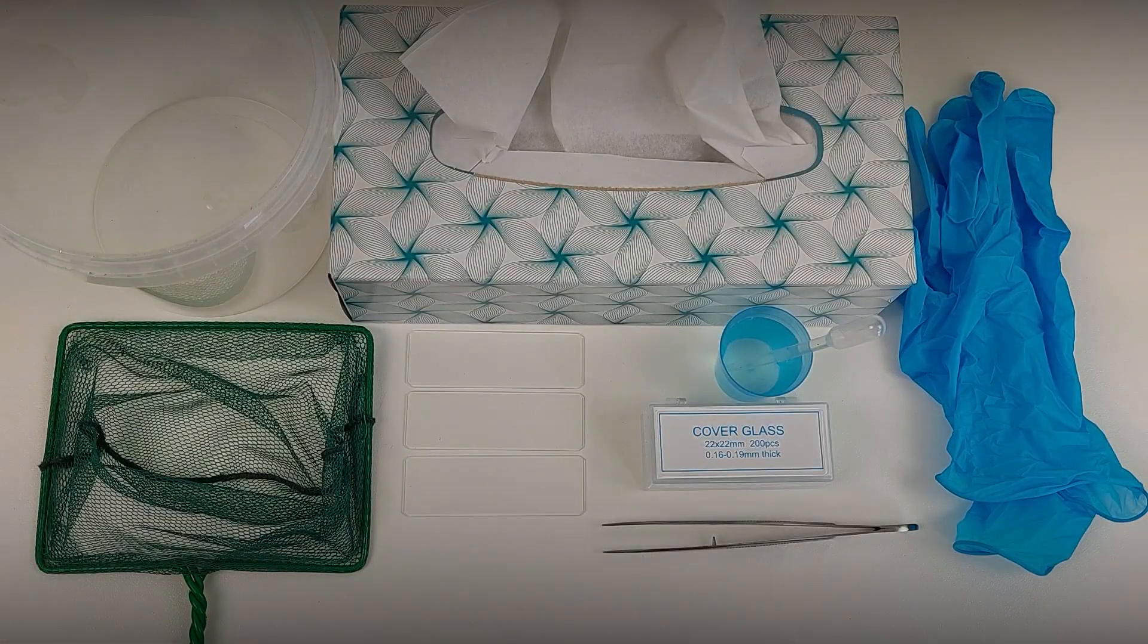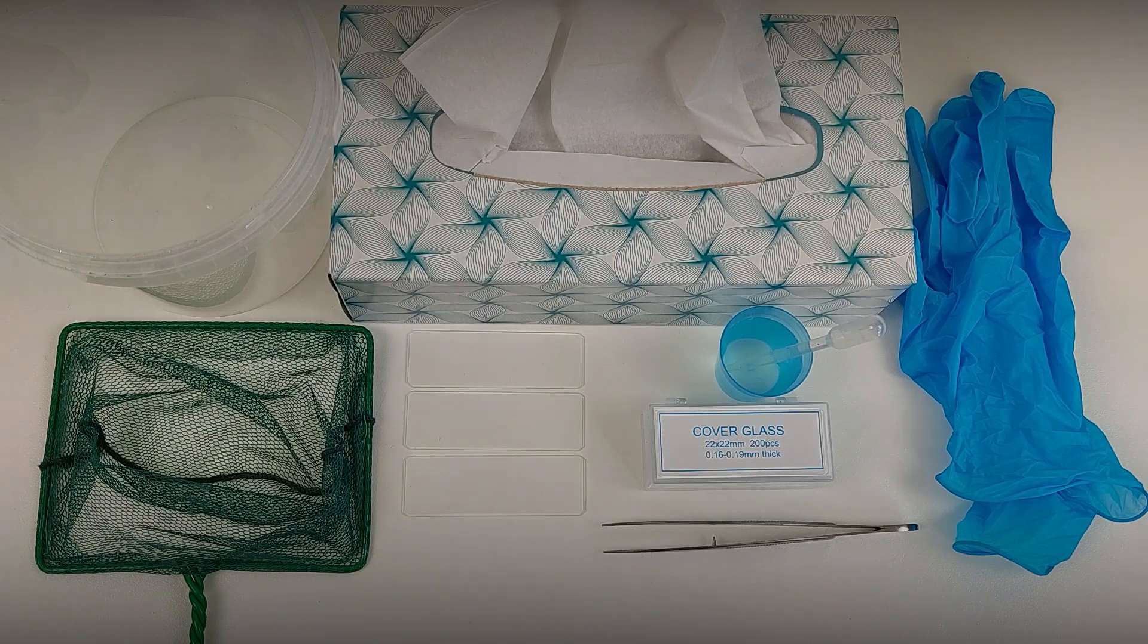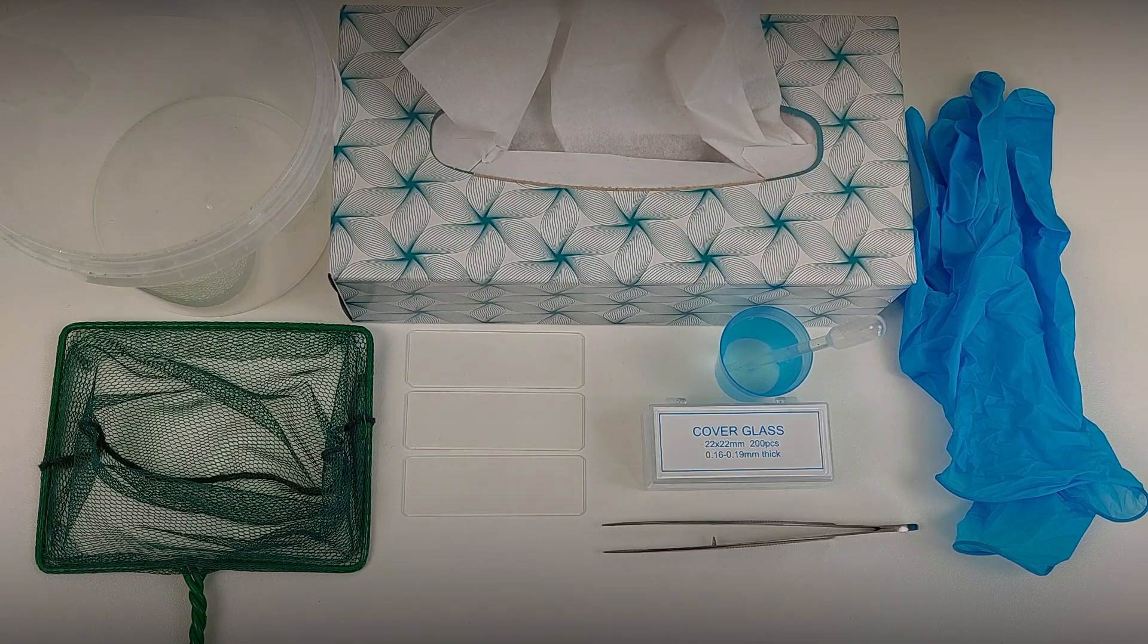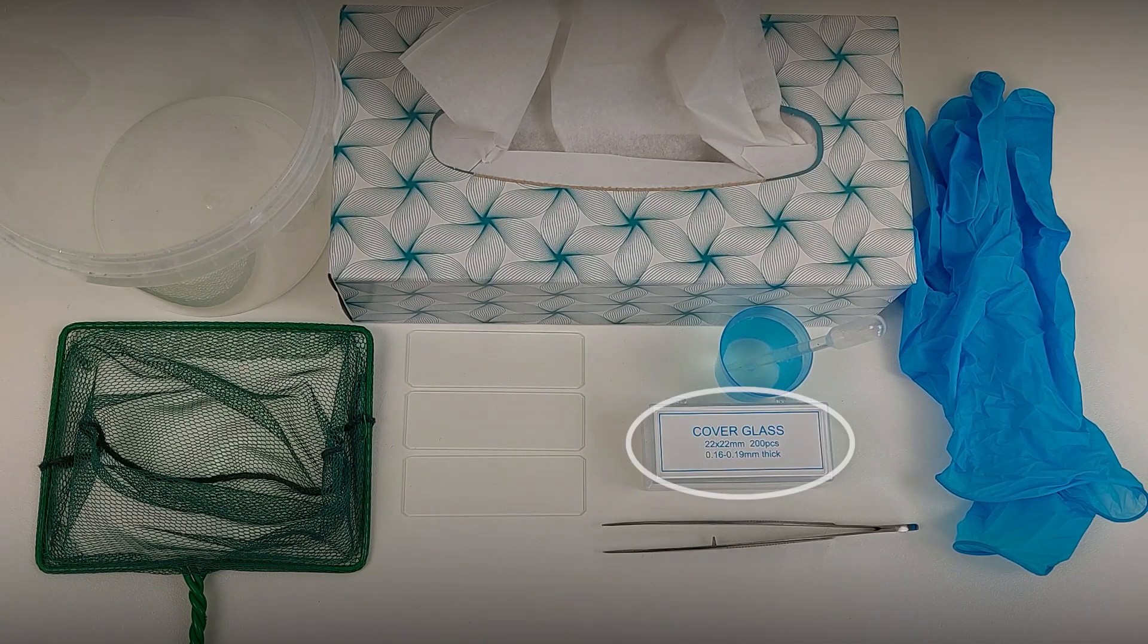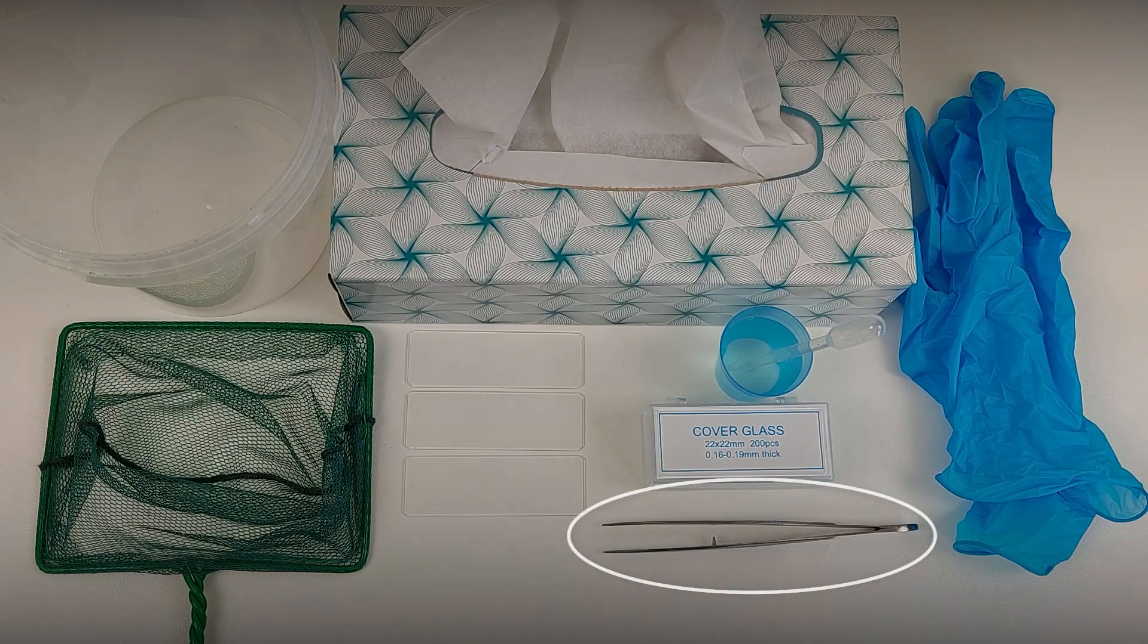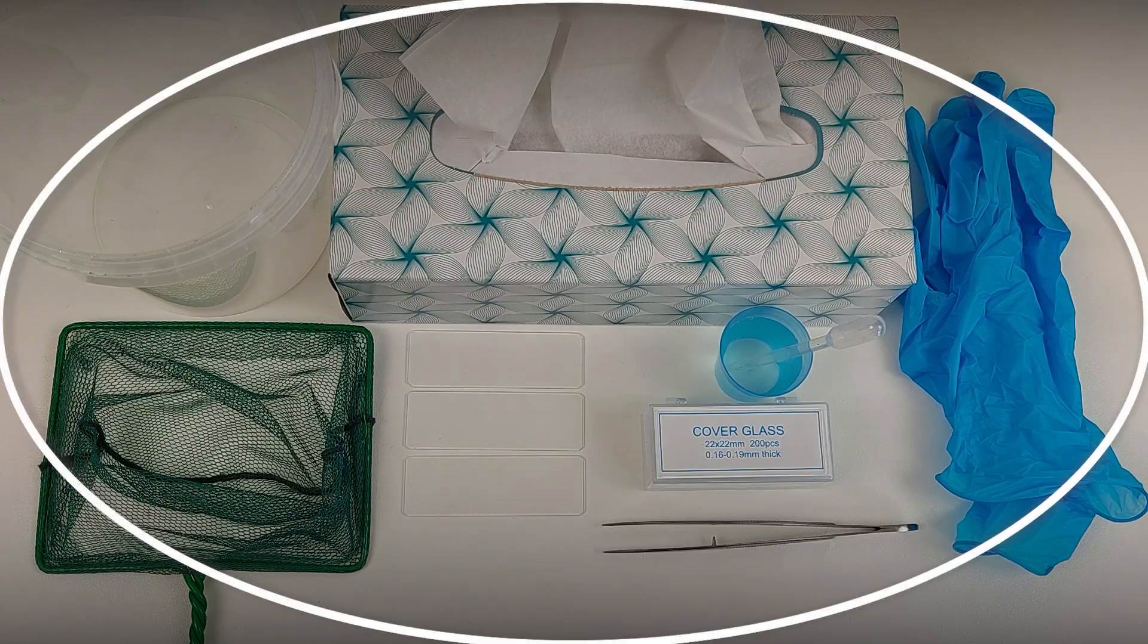To perform a skin scrape, we need the following tools and objects: a container with a lid to hold fish temporarily, a fish net, standard size microscope slides, a cover glass, a pipette or syringe, gloves, tweezers, paper tissue, and a well-lit workstation.